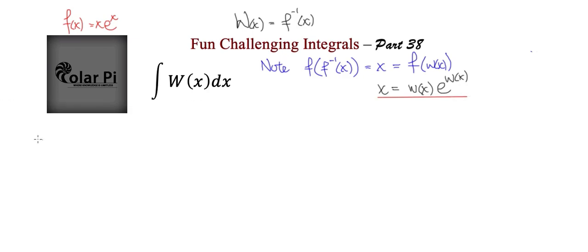Now, to do the integral here, let's start with the substitution that u be equal to W of x. So if u is equal to W of x, then notice that x, which we've underlined here, is equal to u e to the u.